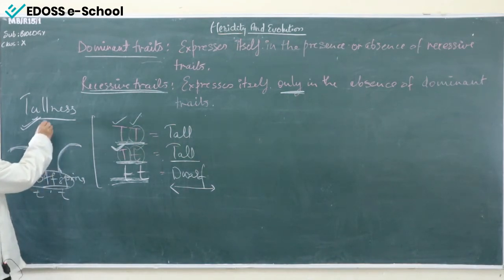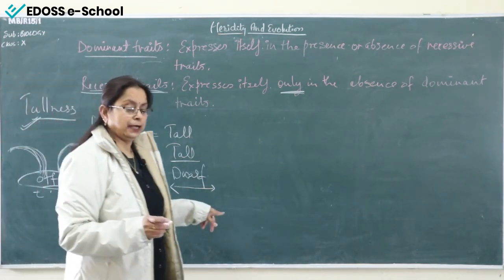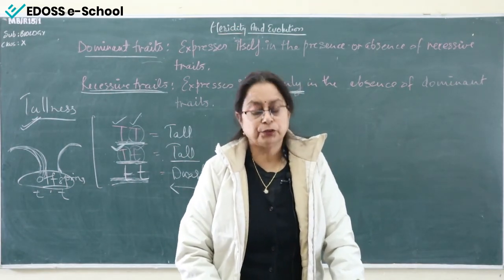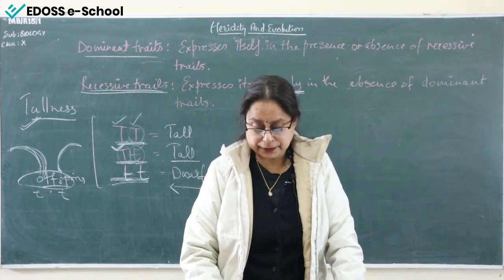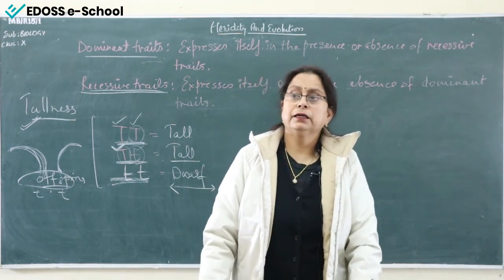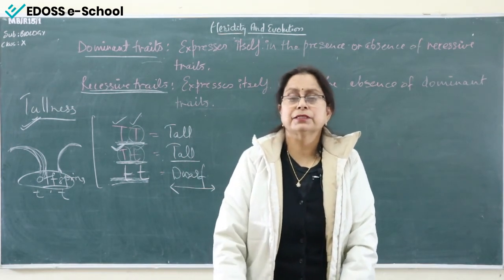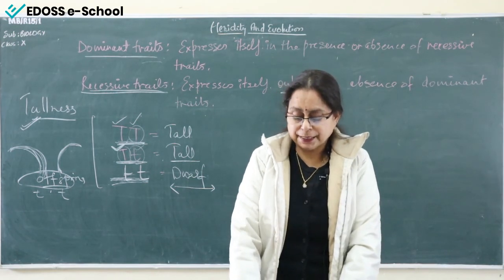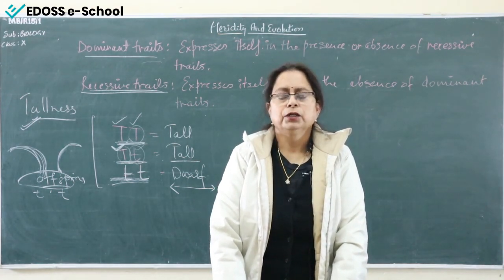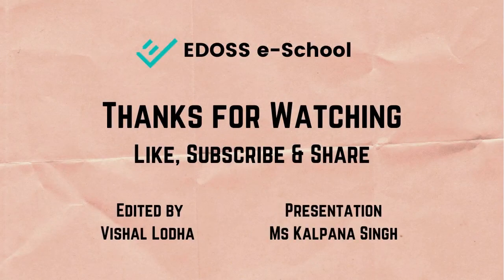With the example of tallness, we can understand dominant and recessive traits. This is all for today. In the next video, I will explain important terms related to the heredity chapter, monohybrid and dihybrid crosses, homozygous and heterozygous, and the summary of Mendel's principles. This year only the summary of Mendel's laws has been asked due to reduced syllabus. The last topic will be sex determination in humans. Thank you, students.